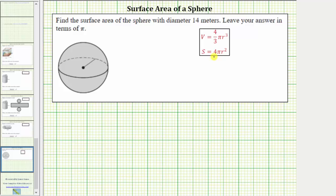The surface area of a sphere is equal to four pi r squared, where r is the radius of the sphere.